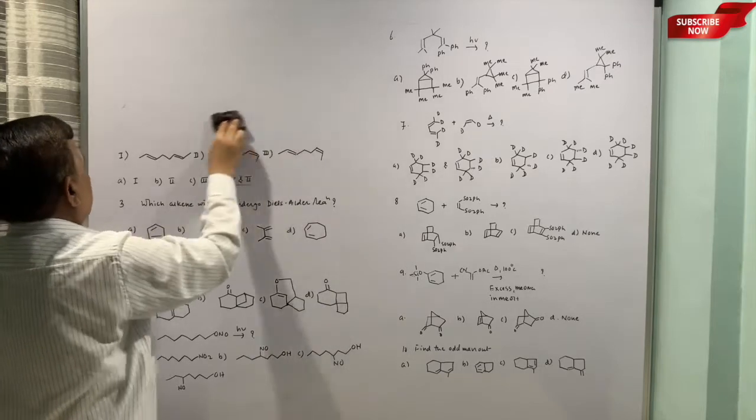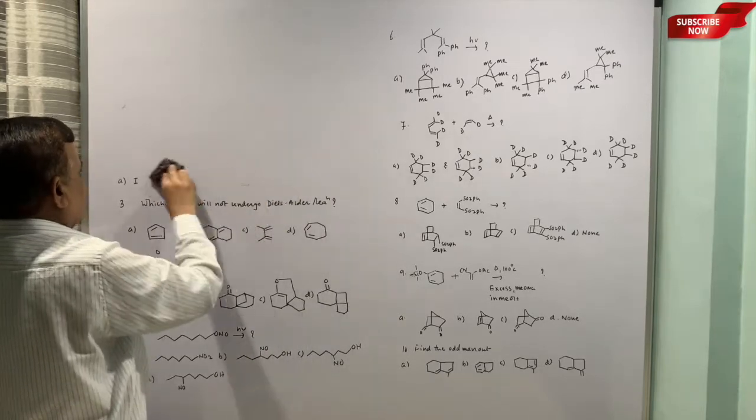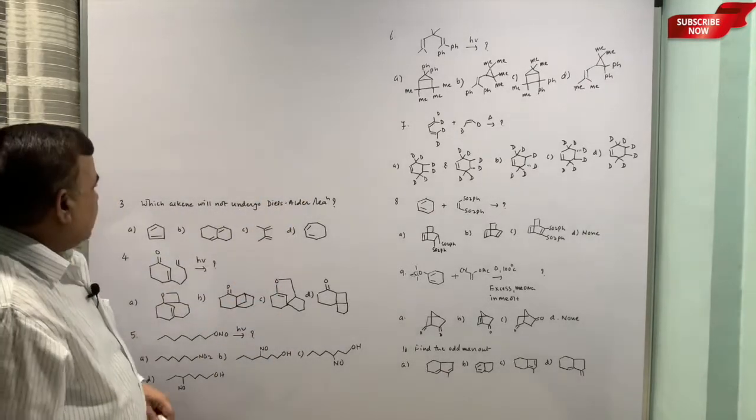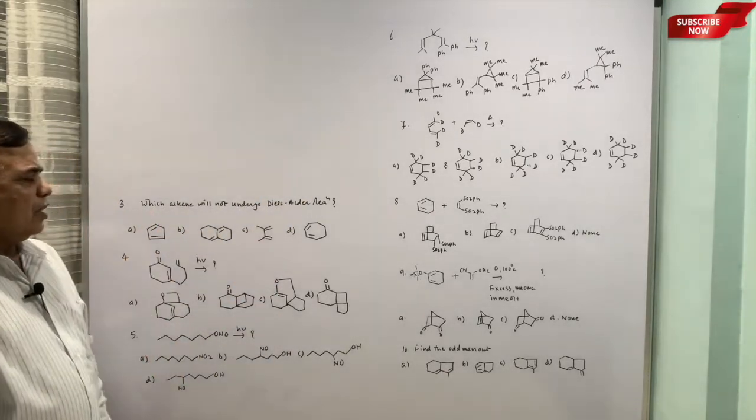Because this is dis rotation, this rotation, this rotation should give cis this trans. So that's why one and two is the correct option.